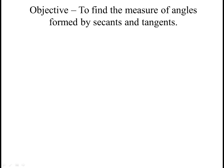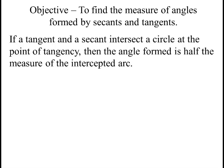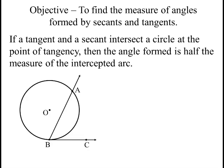Today we're looking at finding the measures of angles formed by secants and tangents. If a tangent and a secant intersect at a circle at a point of tangency, then the angle formed is half the measure of the intercepted arc.